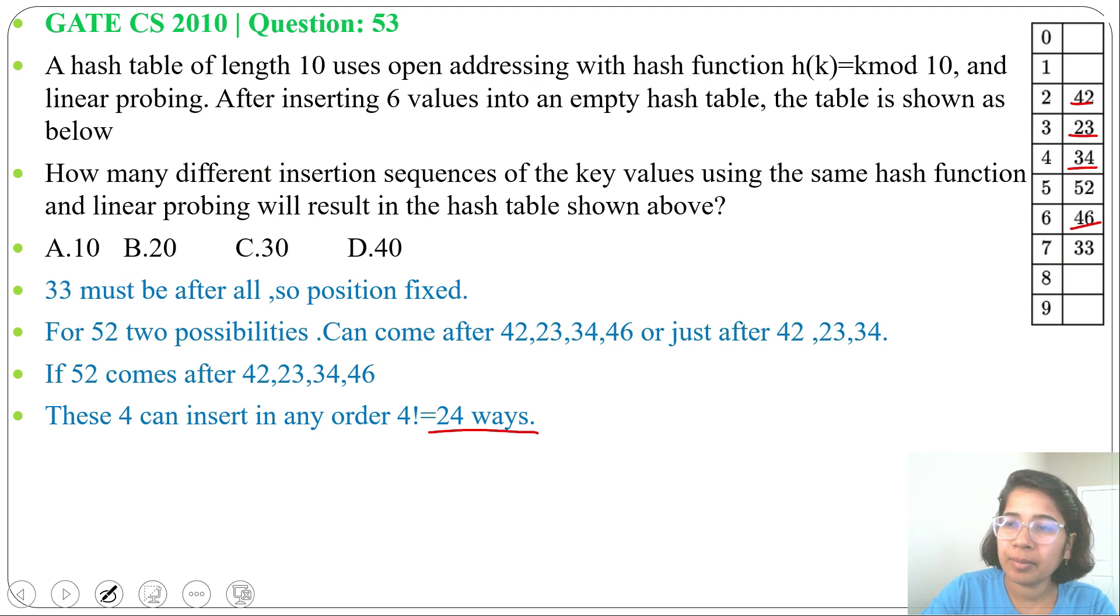When 52 will come after 42, 23, 34 means 3 factorial ways. So these 3 keys, 42, 23, 34 we can arrange in 3 factorial ways. 3 factorial equals to 6.